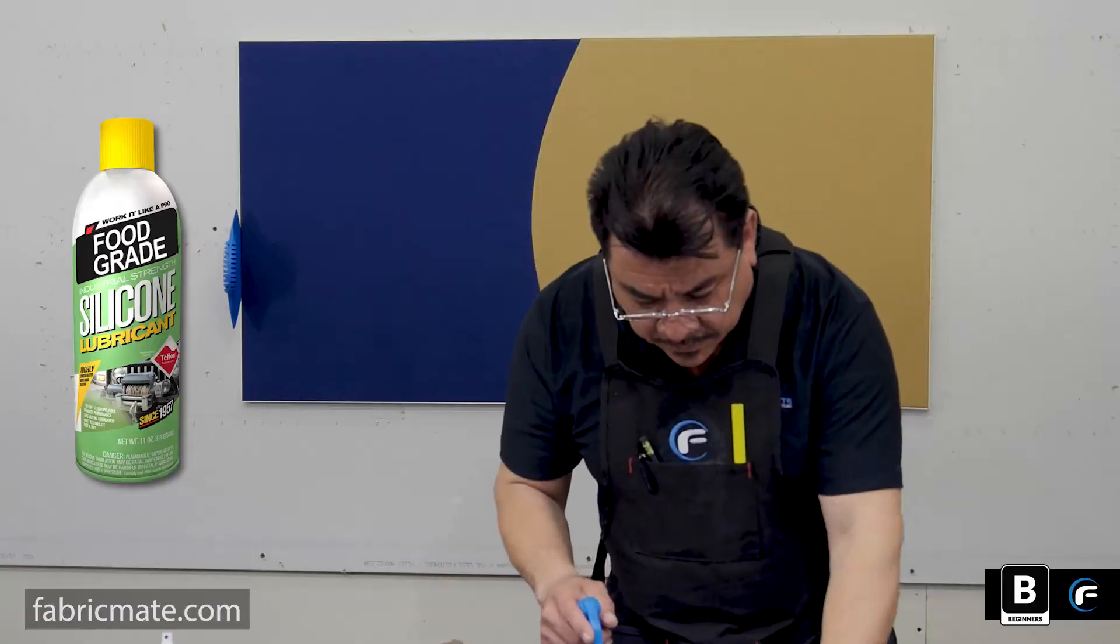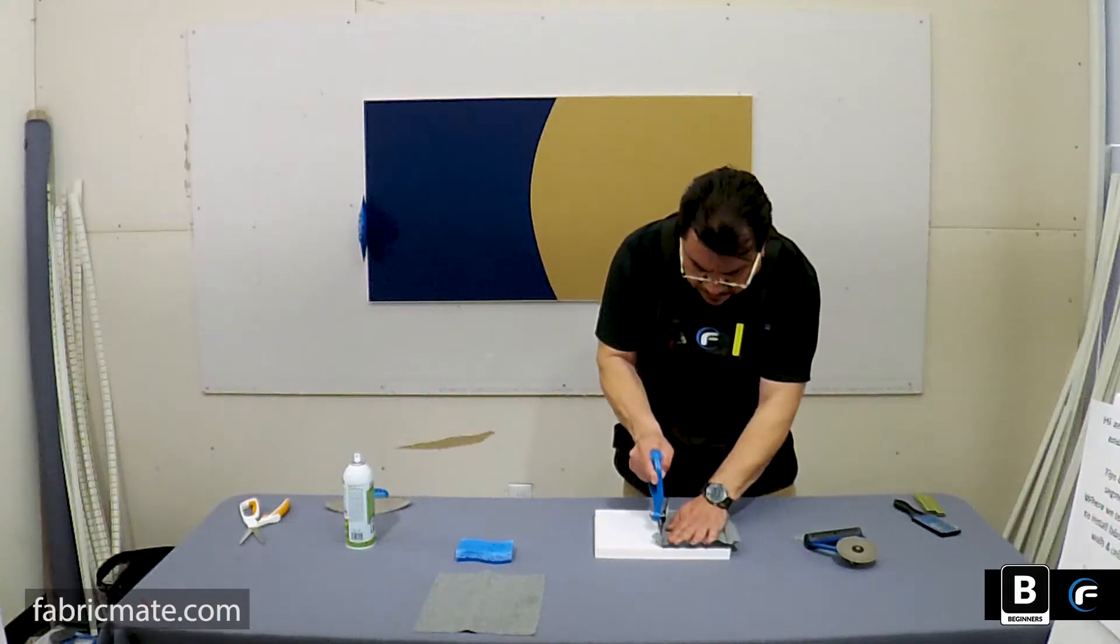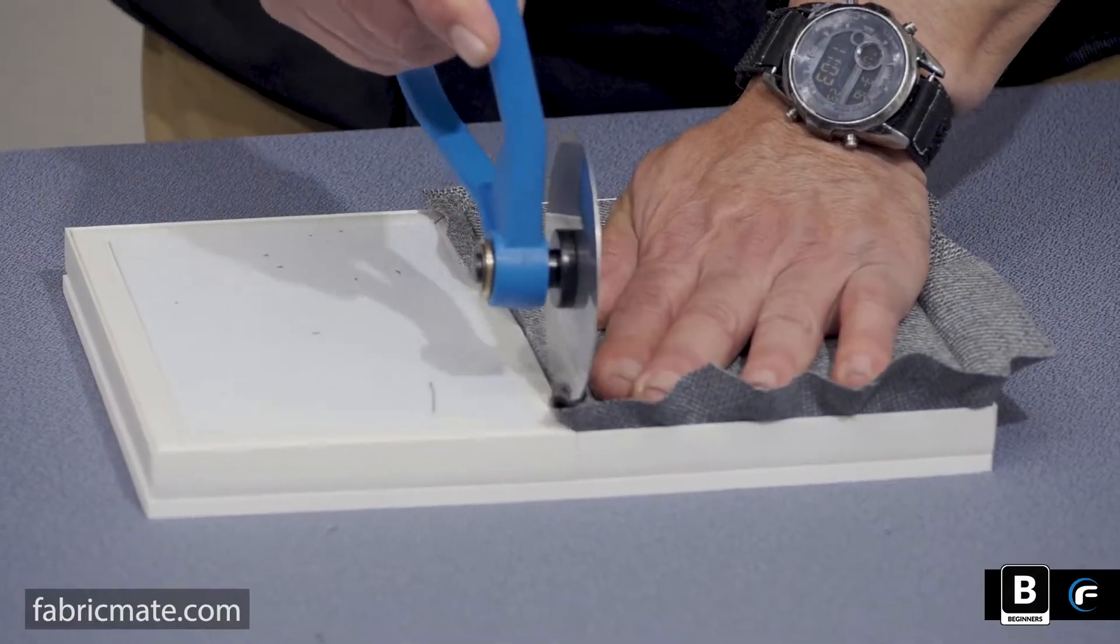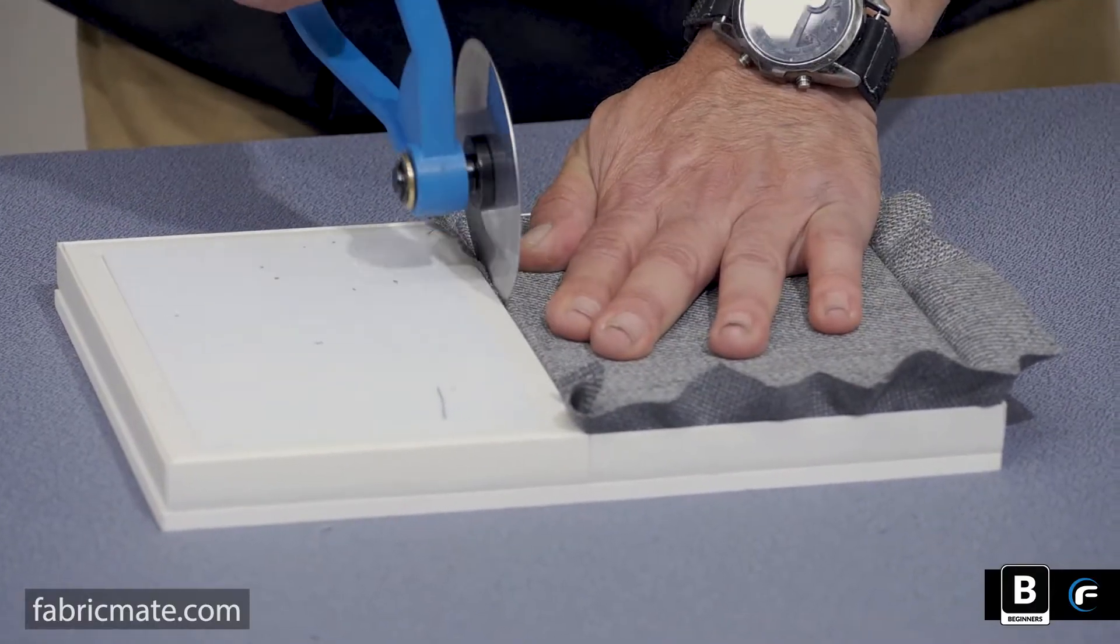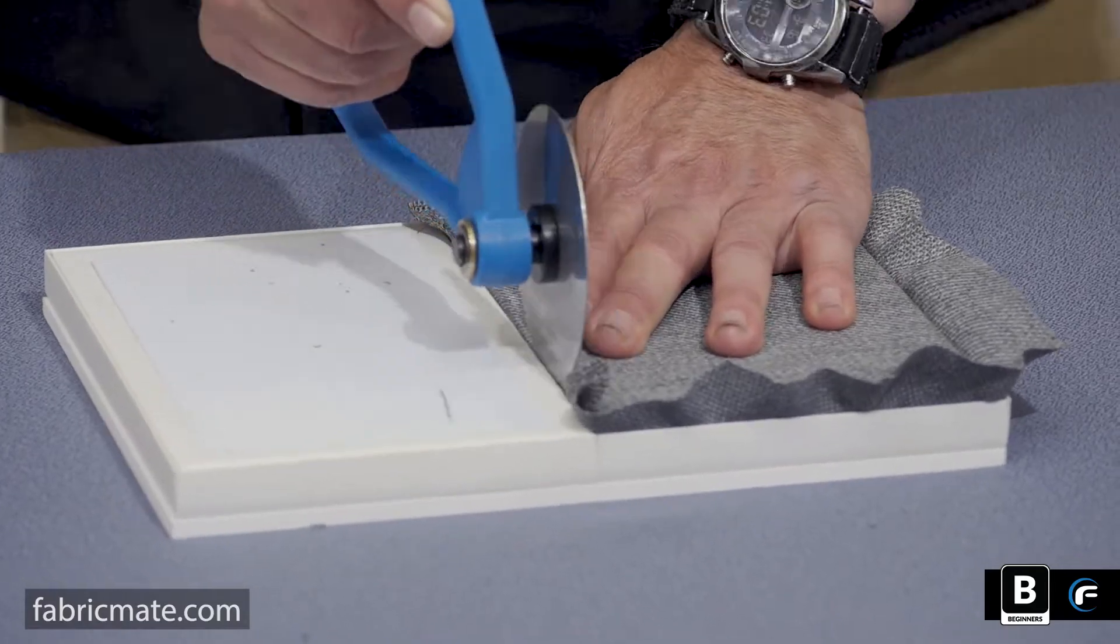Food grade silicone is also available out there at local kitchen supply places or online and you'll notice the difference once you spray it onto the roller tool or slightly into the track jaw.